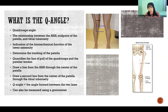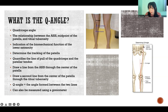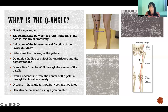To measure the Q angle, we can do that with a goniometer, or you can take a picture and draw lines and then measure the angle that way. You would draw two lines that form an angle: one line goes from the ASIS and passes through the center of the patella, and one line goes from the tibial tuberosity and passes through the center of the patella. The angle formed between those two lines is the Q angle.